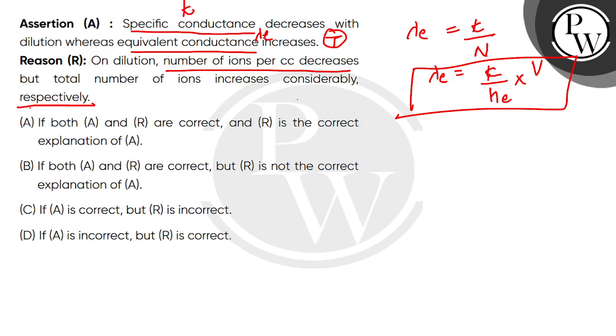Number of ions decrease, but the total number of ions increase. So what will happen? The equivalent conductance will increase.